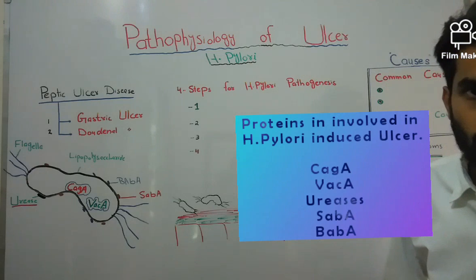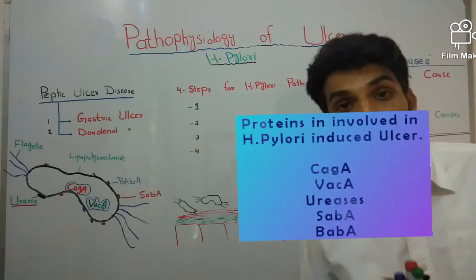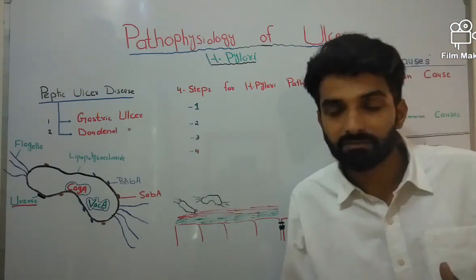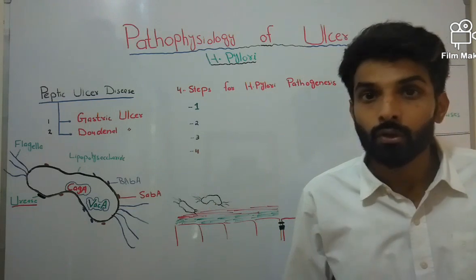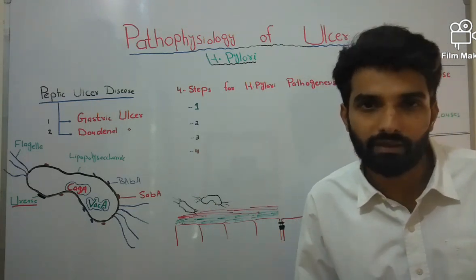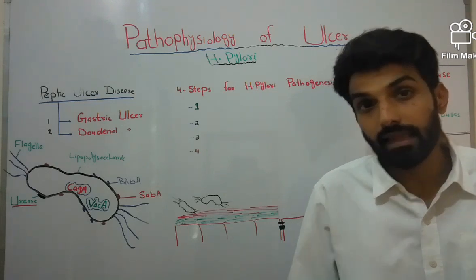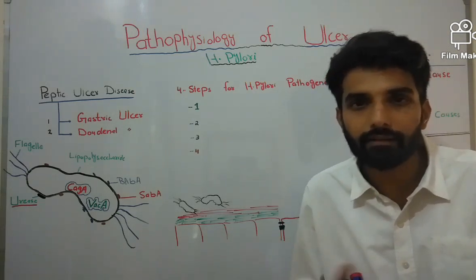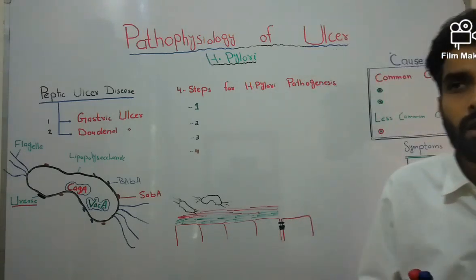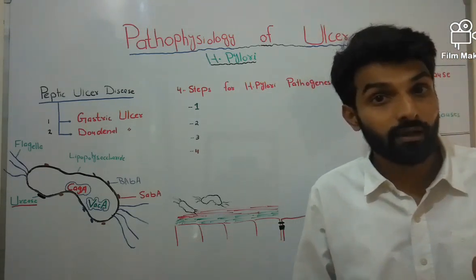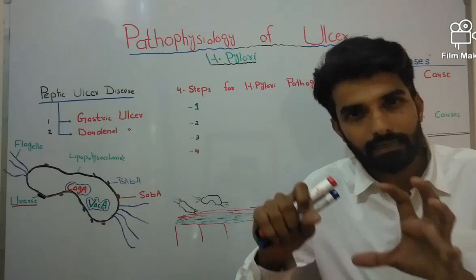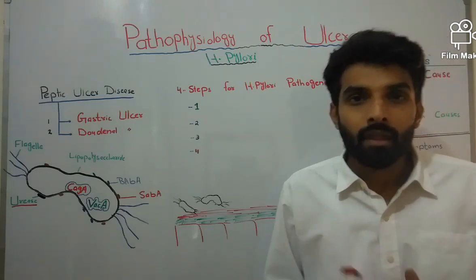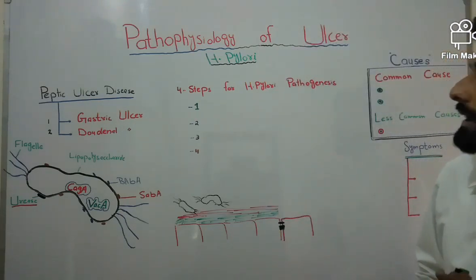Hello friends, in the previous videos we talked about gastric acid physiology, the different types of cells present in the gastric pits and their secretions, the exact mechanism of how gastric acid is synthesized and released from the parietal cell, and the regulation of gastric acid by substances like histamine, gastrin, acetylcholine, prostaglandin, and somatostatin, including which second messengers are involved.